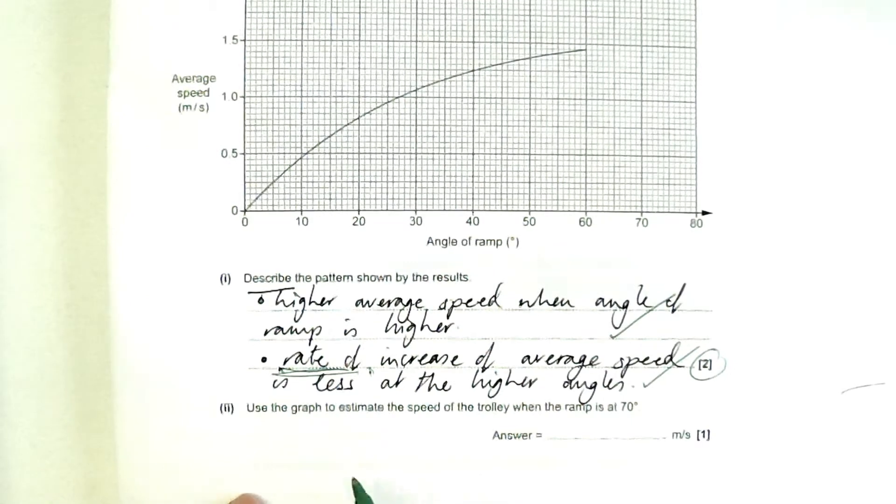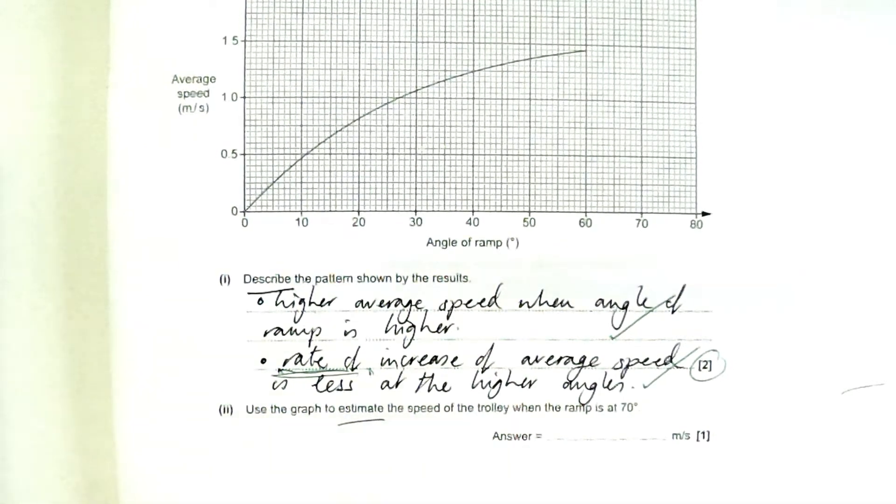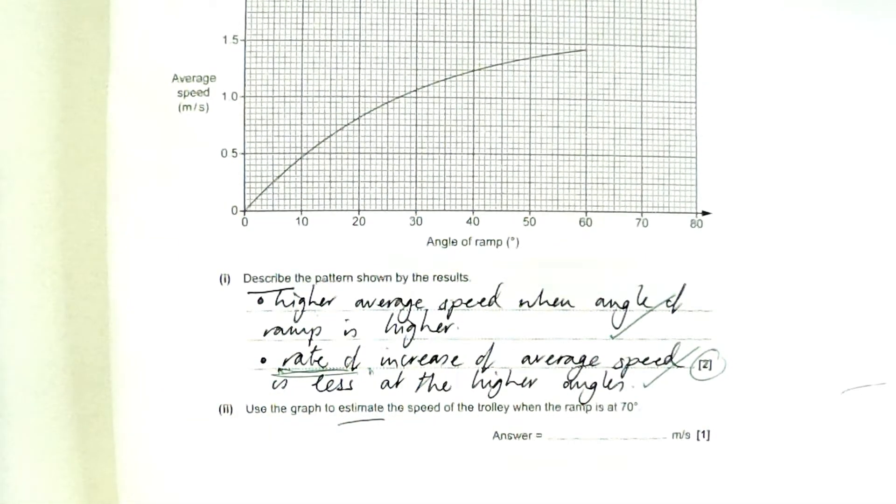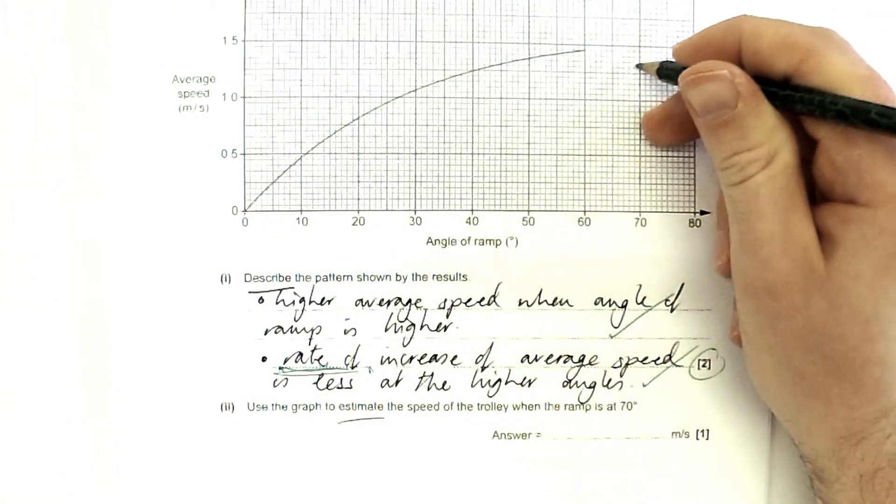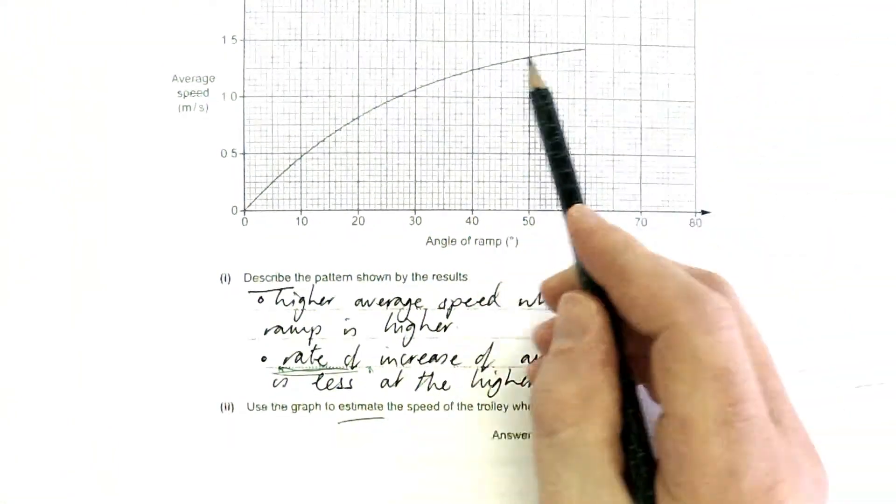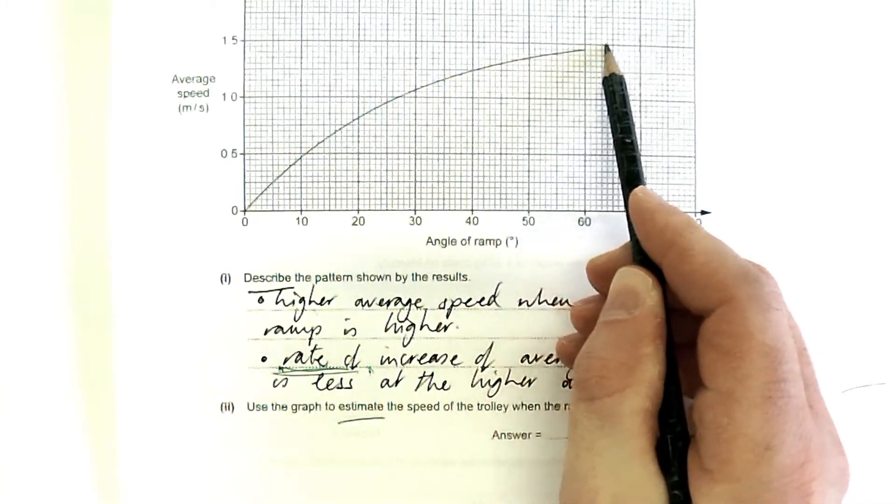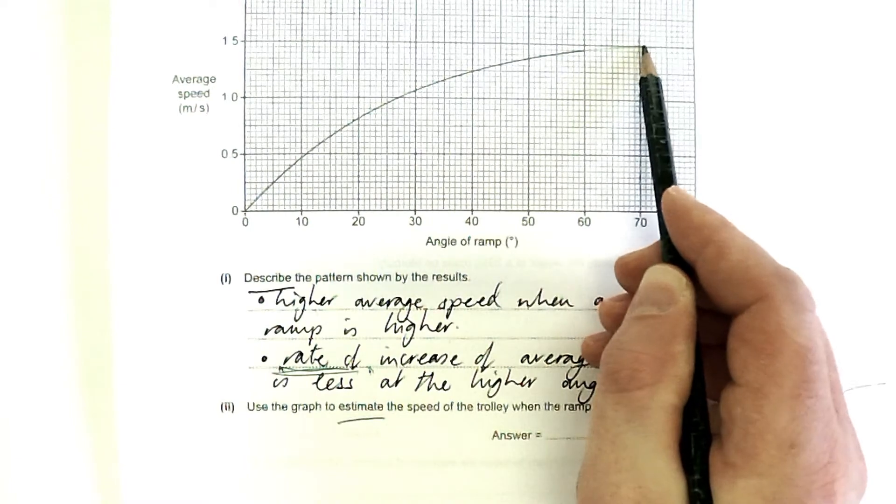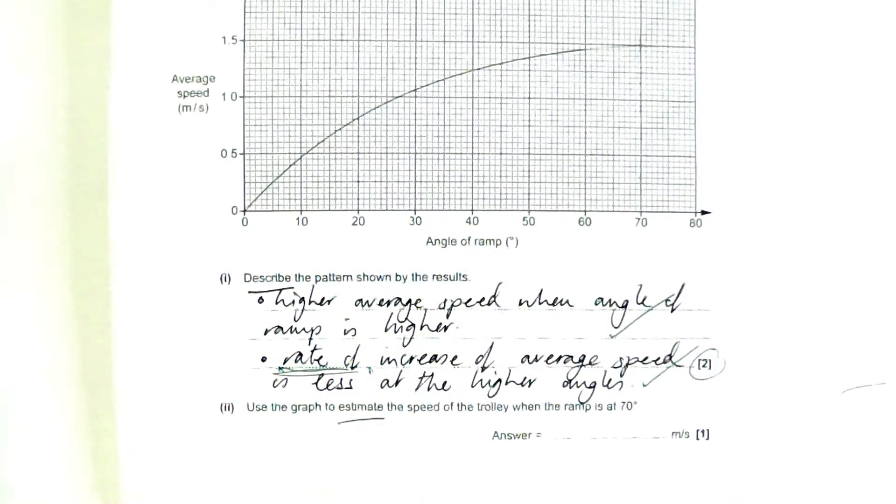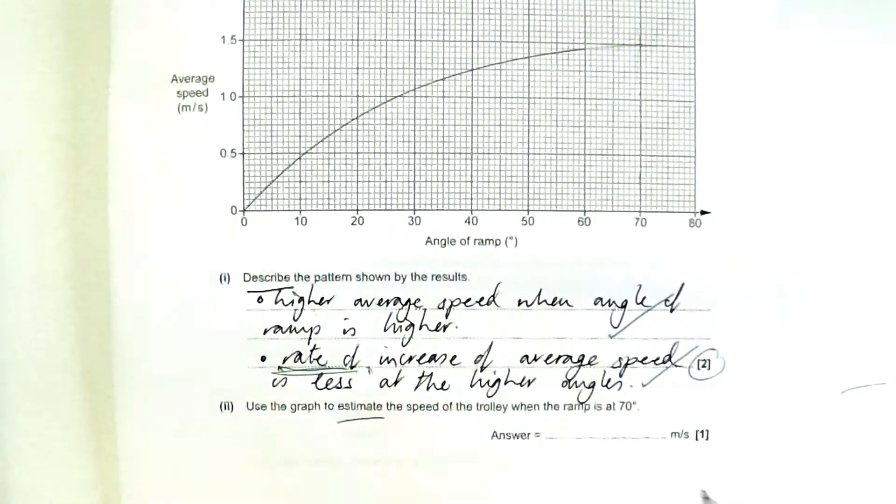Lastly, use the graph to estimate the speed of the trolley when the ramp is 70 degrees. So basically we want to know the speed here. Okay? So what we need to do is just extrapolate this curve a little bit more, like so. Okay, I'm quite happy with that. 1.5 will get me the mark there.